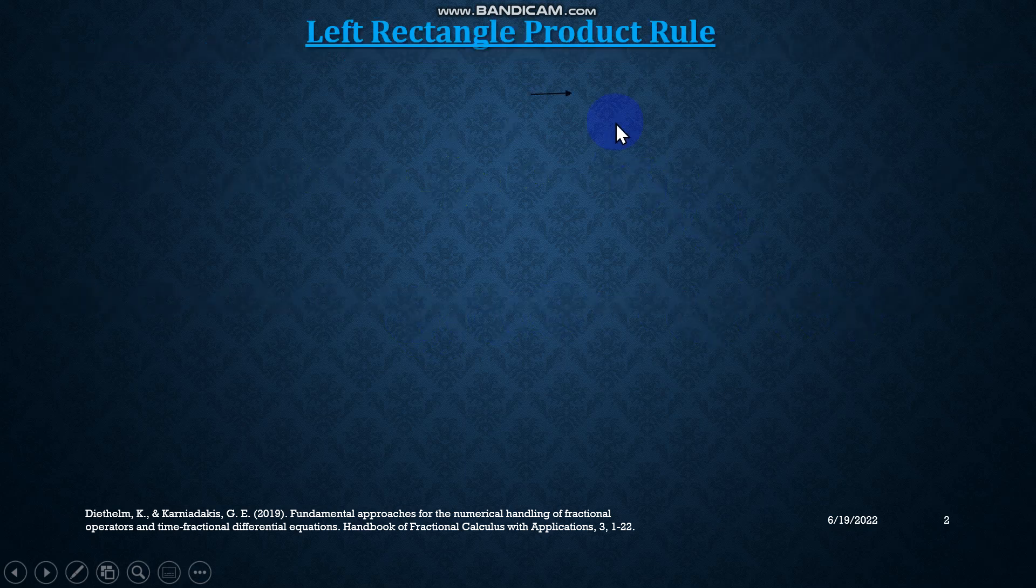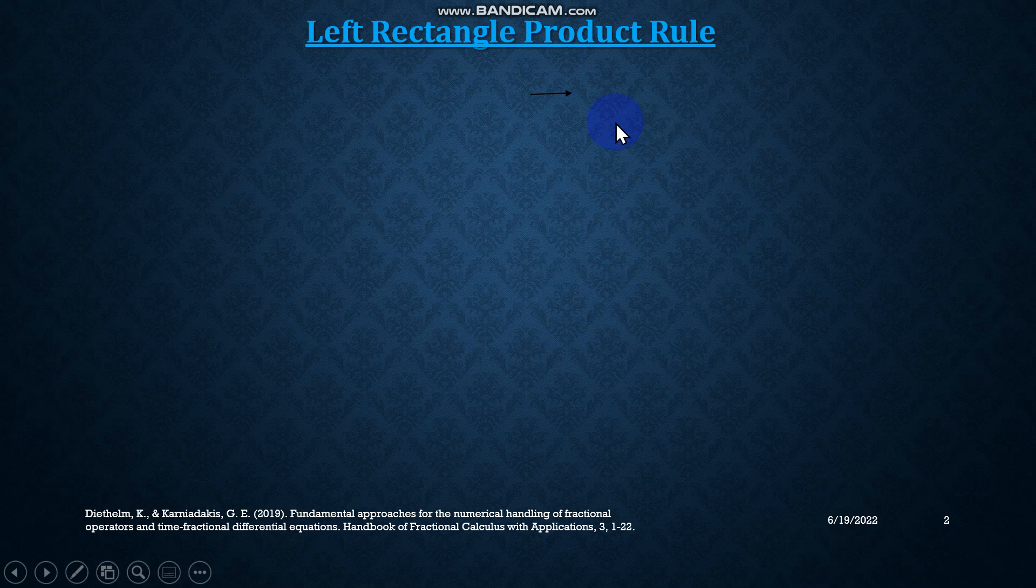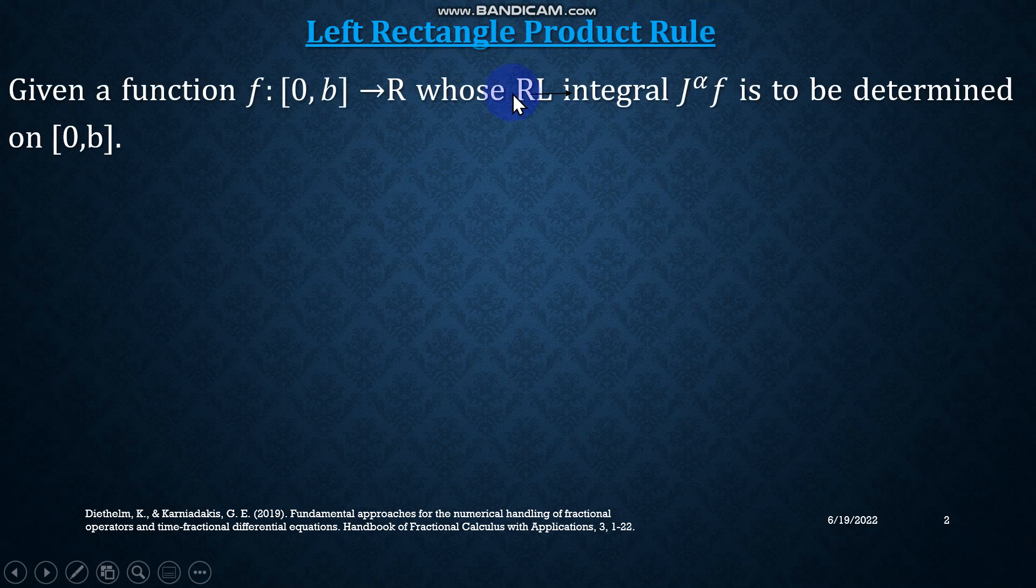So the rule that I am going to derive today is called the left rectangle product rule. Given a function f from the closed interval [0,b] to the set of real numbers R, whose Riemann-Liouville integral is to be determined on this closed interval or the domain of the function.